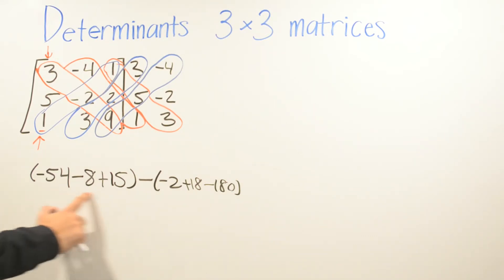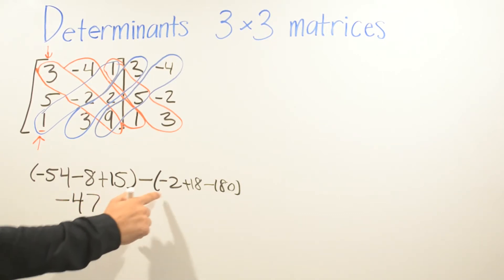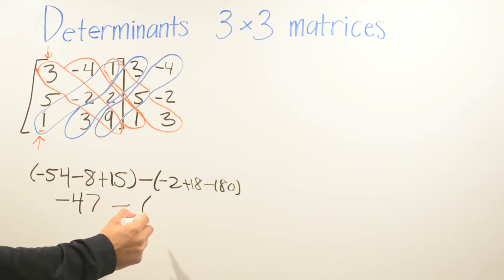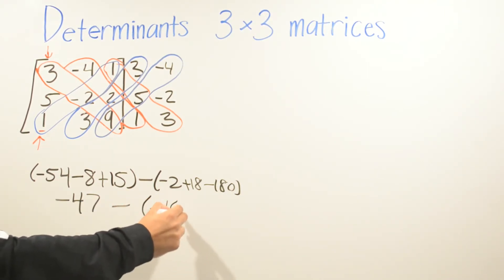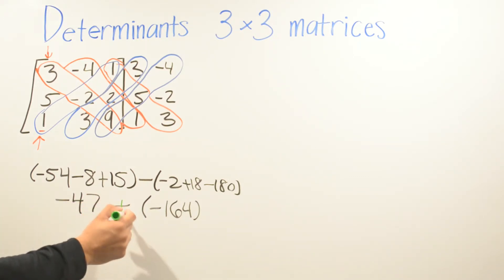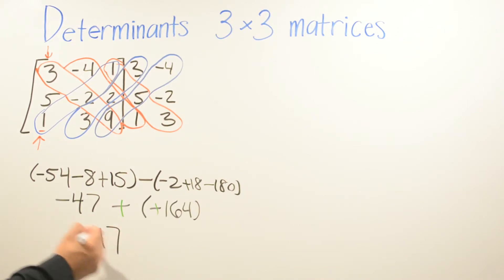After that, we go ahead and add and subtract. The downward diagonals give us negative 47, and then the upward diagonals give us negative 164. We turn the negative to positive, and since we have two different signs — a negative and a positive — we subtract. Our answer is going to give us 117.